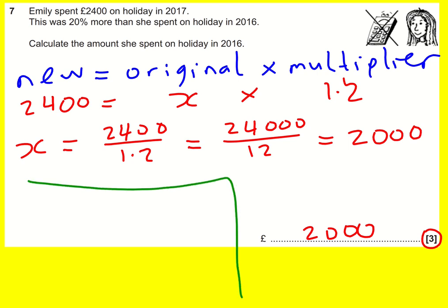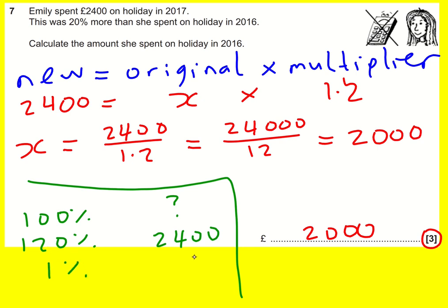If you didn't like the multiplier method, that's okay, but you still need to recognize it's a reverse percentages problem. You say: the original value is 100%, and after increasing by 20% that's 120%, which equals 2400. Work out 1% by dividing by 120, giving 20. Then multiply by 100 to get back to 100%, giving the answer of 2000. I advise the multiplier way, but this method works too if you prefer.